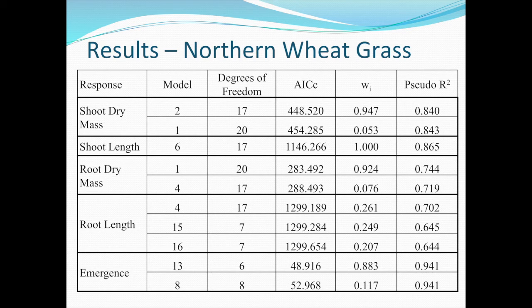Where model averaging really comes into play is how you choose between model 1 and model 2. If you look at the R-squared value, there's not much difference. If you look at the degrees of freedom, there's not much difference either. A statistician would probably choose one as the best model. But model averaging comes into its own because instead of ignoring or choosing between the two, it averages the values of the parameters by an objective weighting. So 94 to 95% of the weight is given to the first model, and only the remaining 5% to the second — giving one clearly superior model based on an information-theoretic criterion, not the R-squared.